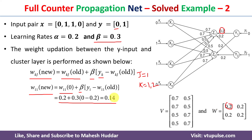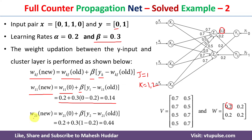Similarly, for k=2, j=1: w21(new) = w21(old) + beta * (y2 minus w21(old)). w21(old) = 0.2, beta = 0.3, y2 = 1, and w21(old) = 0.2. Solving this equation gives w21(new) = 0.44.